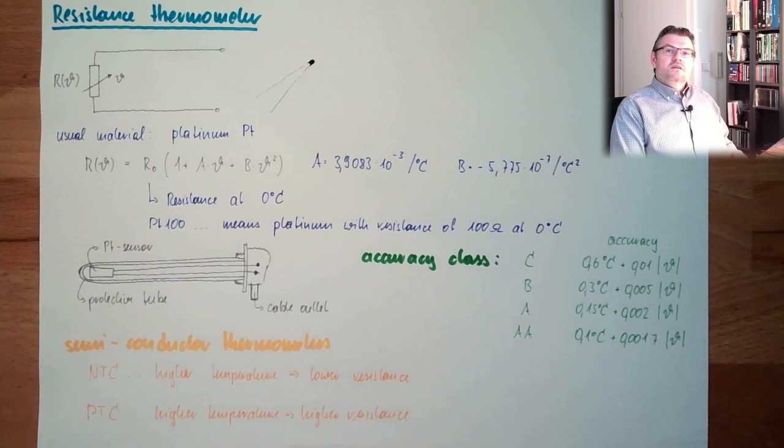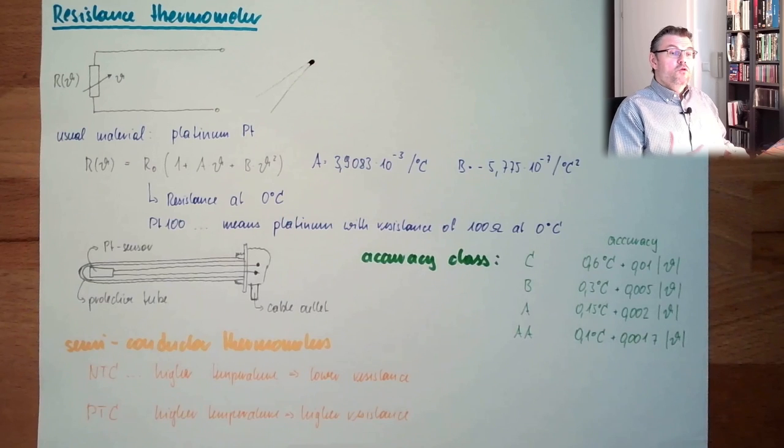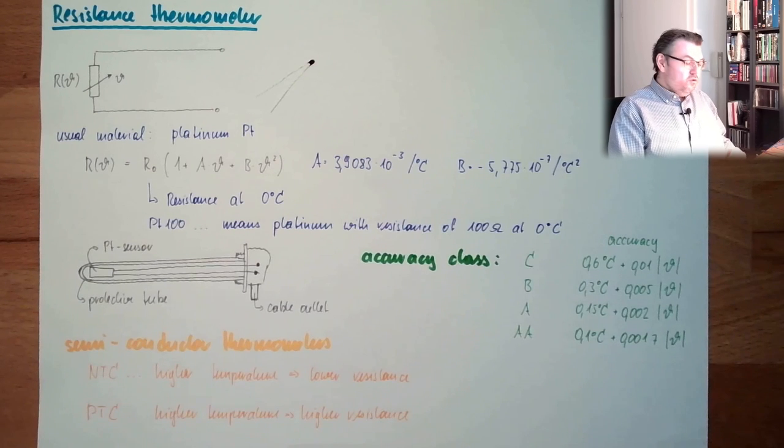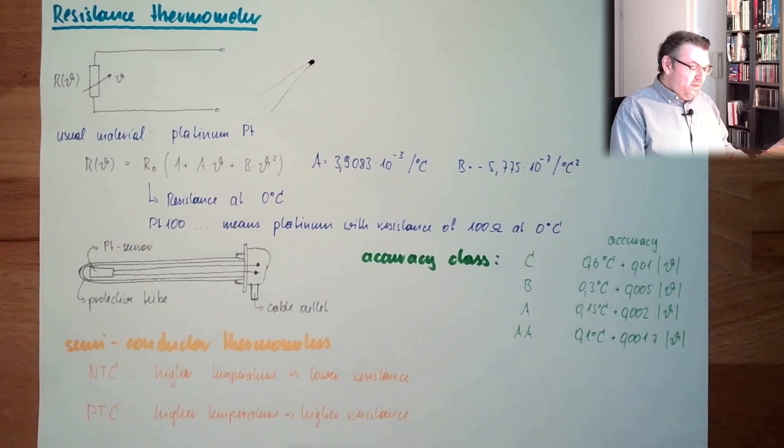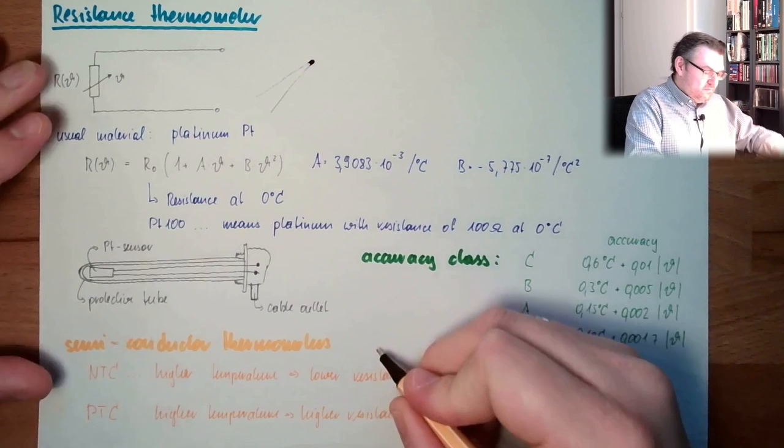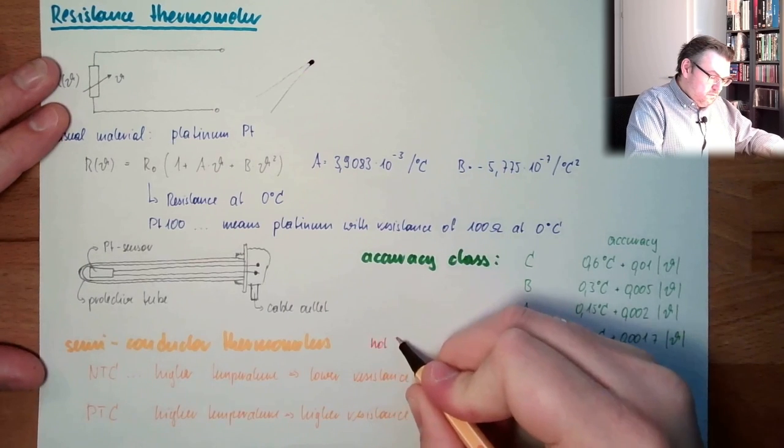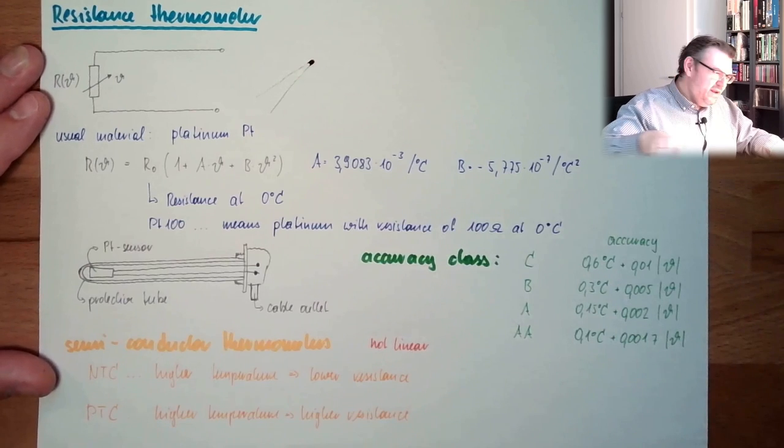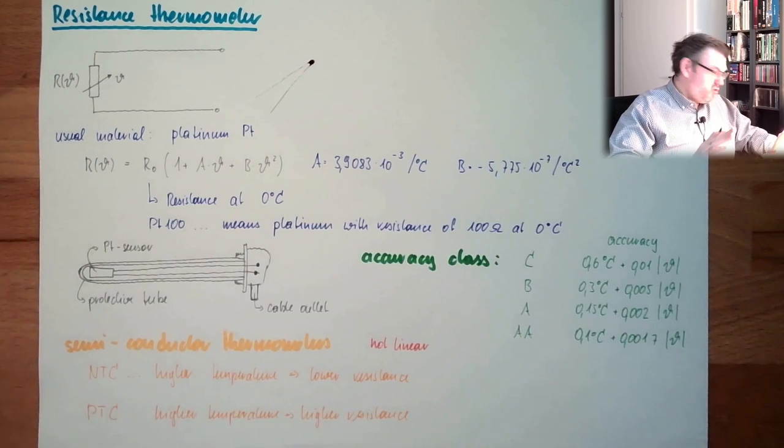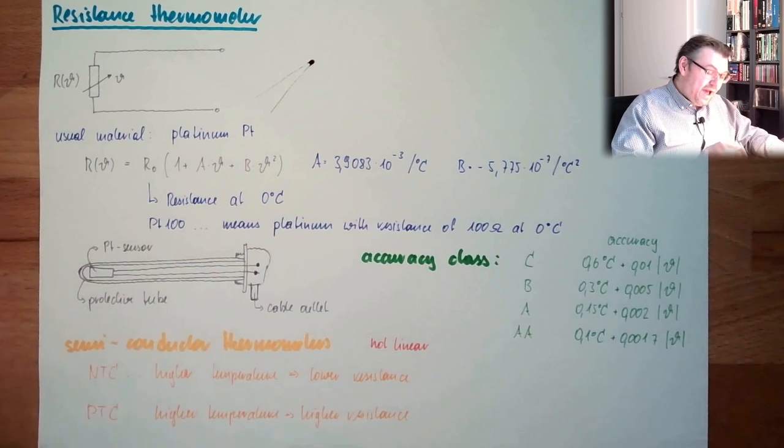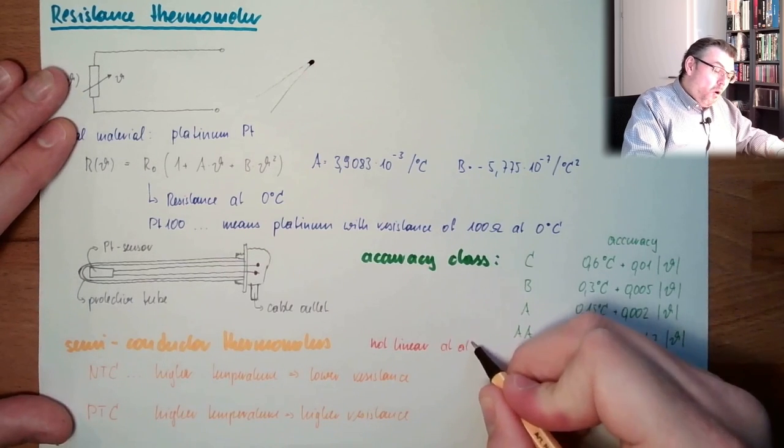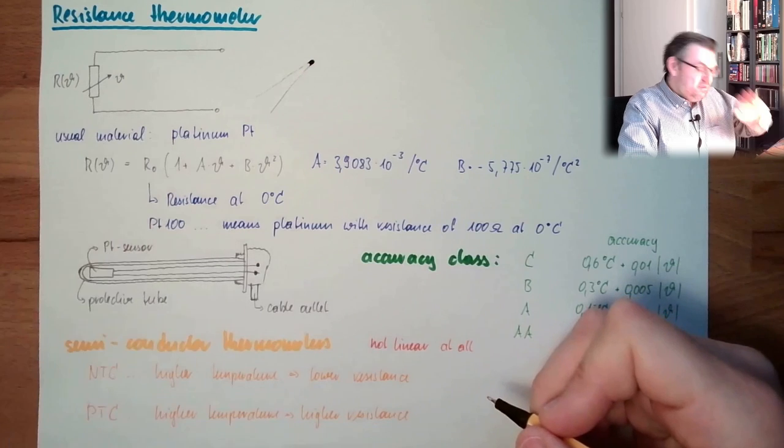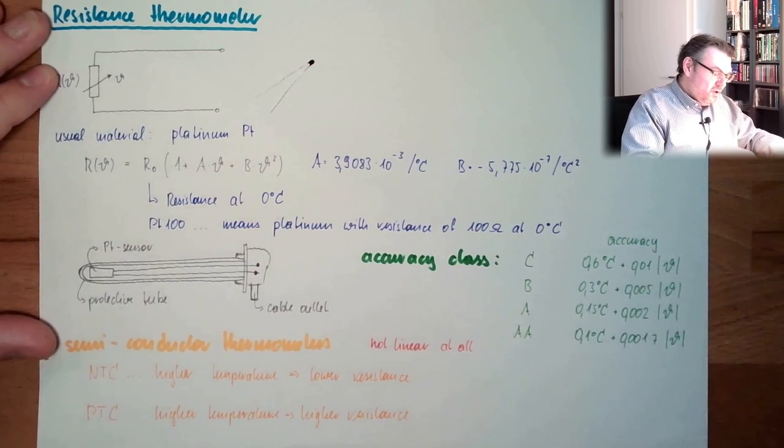If they are changing their resistance so good and so huge, why not use them everywhere? Because those things are not linear. Not linear means really not linear. Really, really straight. Not linear at all. Right. At all. Because this is also not linear. But this is way different. Not linear.